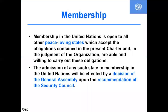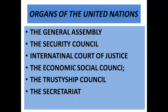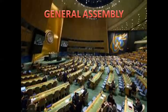Any nation that wants peace can become a member, with admission decided by the General Assembly on recommendation of the Security Council. There are six organs of the UN. Three are particularly important: the General Assembly, the Security Council, and the International Court of Justice. The other three — the Economic and Social Council, the Trusteeship Council, and the Secretariat — were also established. At present, the Trusteeship Council is no longer working.